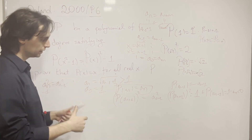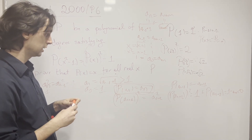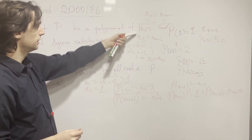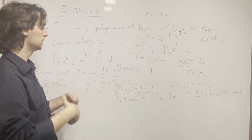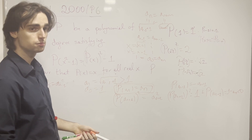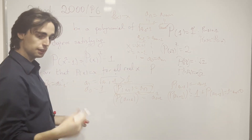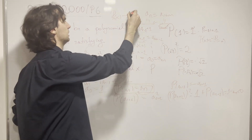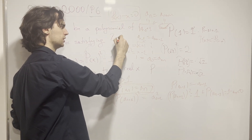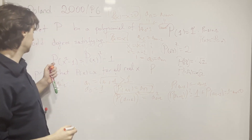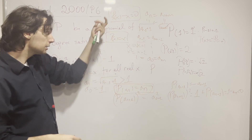So we've created an infinite sequence of distinct real numbers x such that P(x) equals x. Therefore the polynomial P(x) minus x has infinitely many zeros, which means it is identically zero, and so P(x) equals x. This proves our claim that P(x) equals x for all real numbers x, and this finishes the problem.